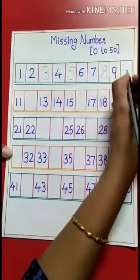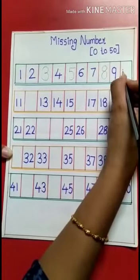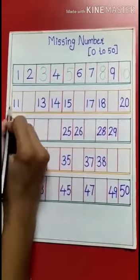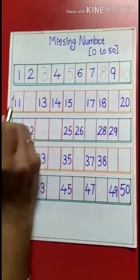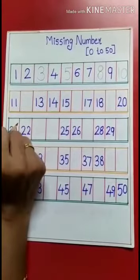6, 7, after 7, yes, 8. After 8, 9, already written over here. And after 9, what number comes? Yes, 10, 10.